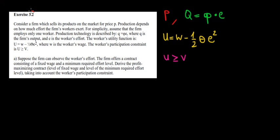Let's start working on question 3.2. We have a firm which sells its products on the market for a price P. The production depends on how much effort the workers put in. There is one worker and the production technology is described by Q equals theta times E.